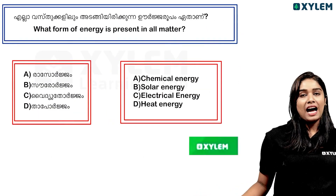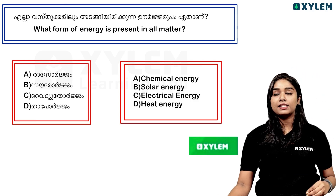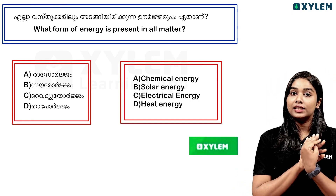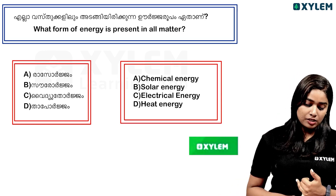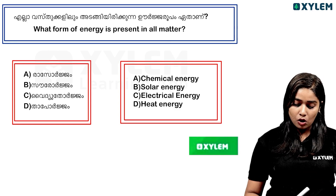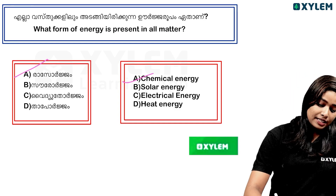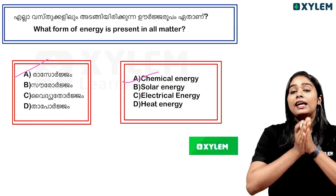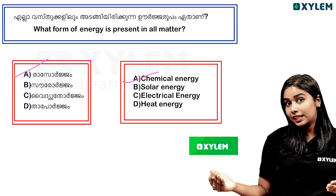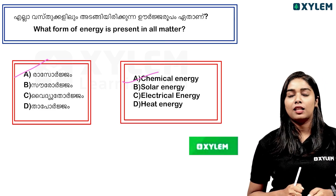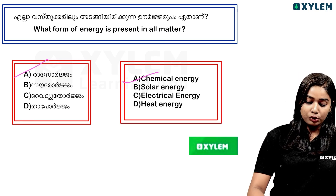Next question: What form of energy is present in all matter? The options are Chemical Energy, Solar Energy, Electrical Energy, and Heat Energy. All matter contains chemical energy — that is why it is called chemical energy. Solar energy is converted through photosynthesis. The answer is Chemical Energy. That is very important.